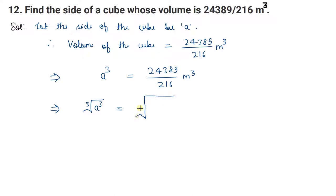And here we will write the cube root. Cube root of a³ equals cube root of 24,389 upon 216 meter cube.